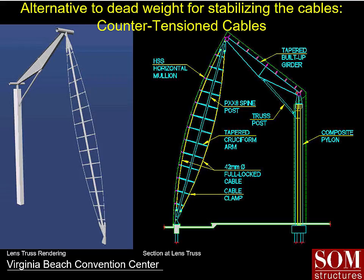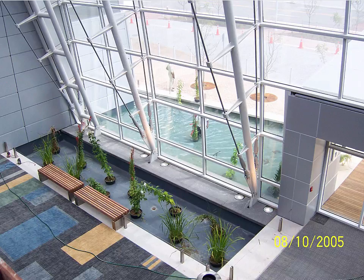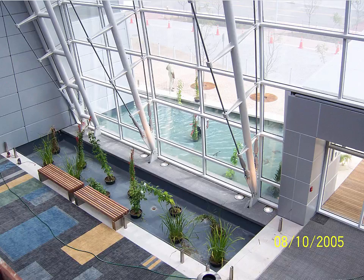We can use cables in an alternate system — this is the Virginia Beach Convention Center designed by Skidmore Owings and Merrill, using lenticular cable trusses. There is a high-strength steel cable with a yield stress capacity of 270,000 pounds per square inch, another cable, and a compression member down the middle. The compression member is a round tube, which works really well to resist buckling and any torsion that might occur. These elements contain threaded connectors used to counter-tension the cables against each other to prevent slack under wind load and to ensure dimensional accuracy.